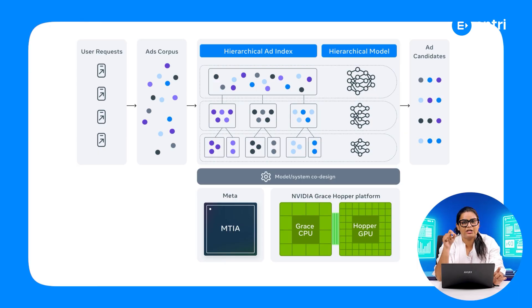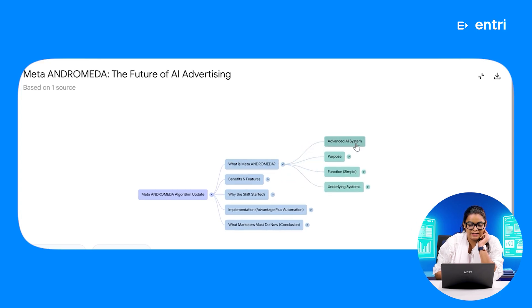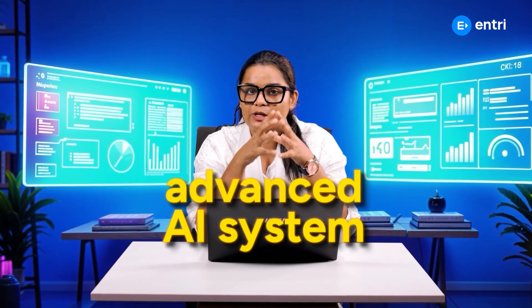So what is Antromeda and what is the benefit of it? If you have a detailed document, you can find the link in the description. How does it work? Antromeda is an advanced AI system. What is its purpose and function? It is an AI system — that's why we create a manual campaign and let the AI system take over.